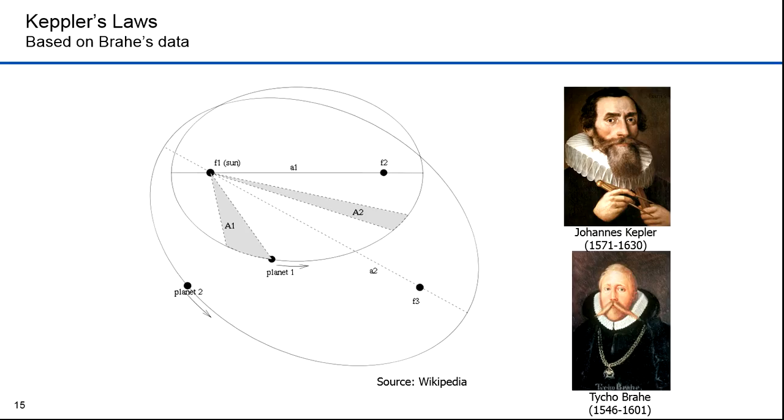Kepler revolutionized astronomy and was the father of orbital dynamics. Johannes Kepler was a German mathematician, astronomer, and astrologer, and a key figure in the 17th century scientific revolution. He could not have achieved what he did without the help from a Danish nobleman named Tycho Brahe. Brahe, known for his accurate and comprehensive astronomical and planetary observations, was well known in his lifetime as an astronomer and alchemist. No one before Tycho had attempted to make so many planetary observations. He achieved his goal of measuring to one minute of arc, that's one sixtieth of a degree. This was a tremendous feat, given that this was before the invention of the telescope. His aim was to confirm his own picture of the universe, which was that the Earth was at rest, the Sun went around the Earth, and the planets all went around the Sun, an intermediate theory between Ptolemy and Copernicus.